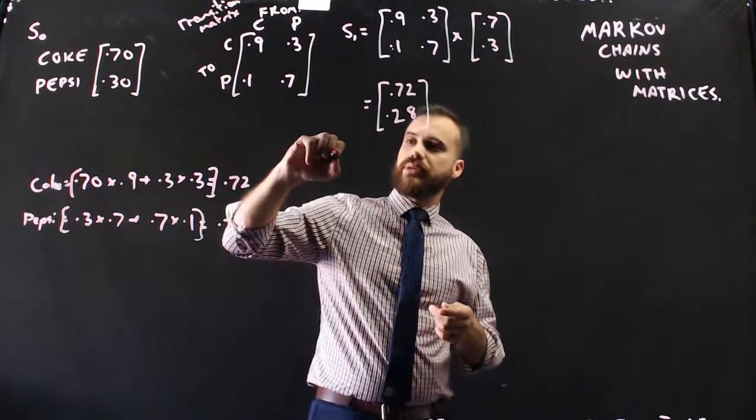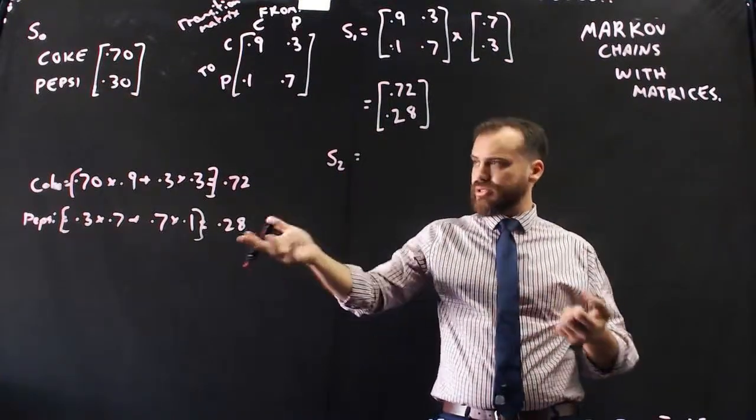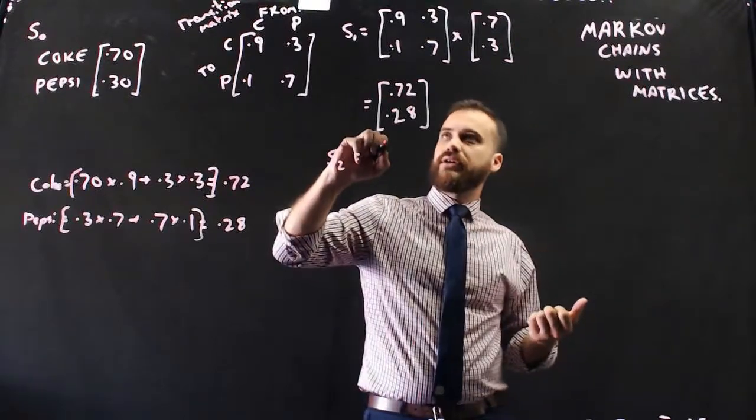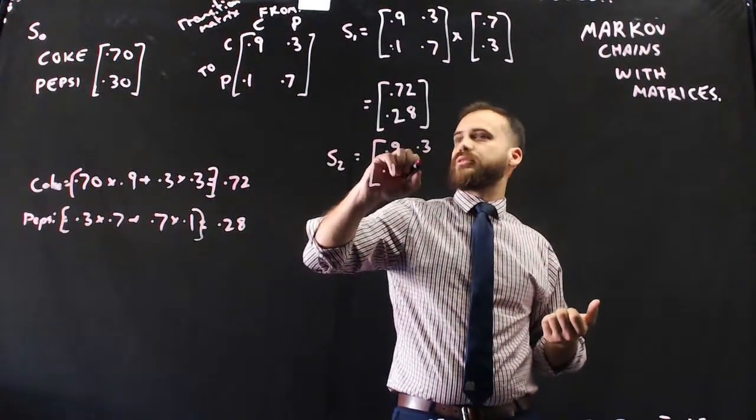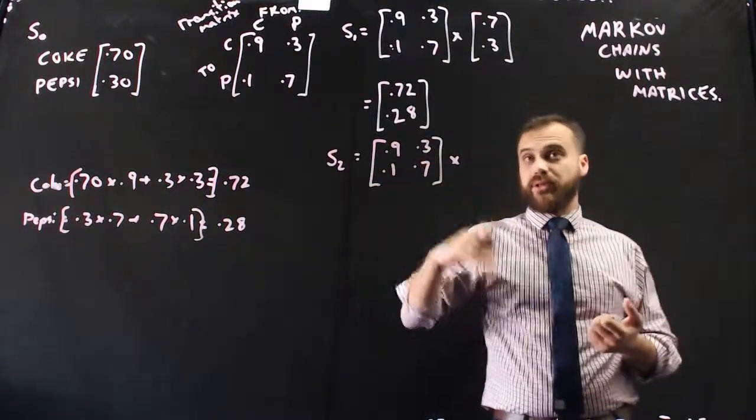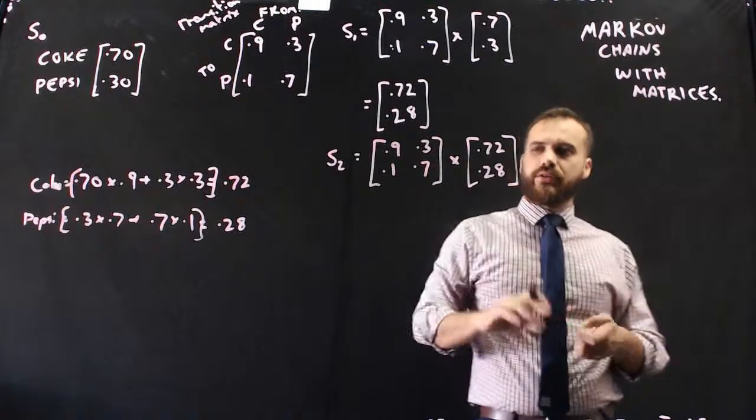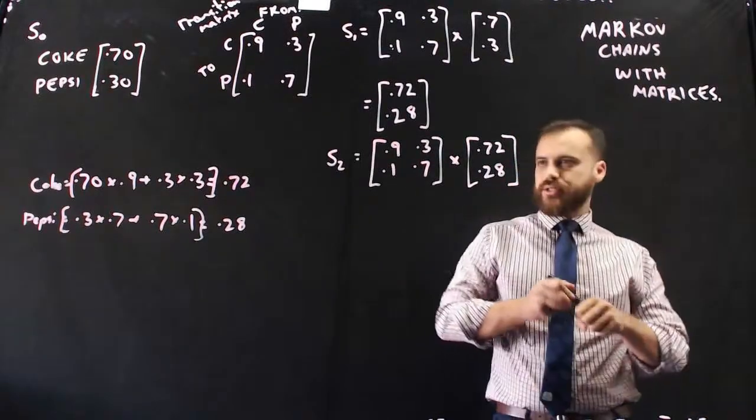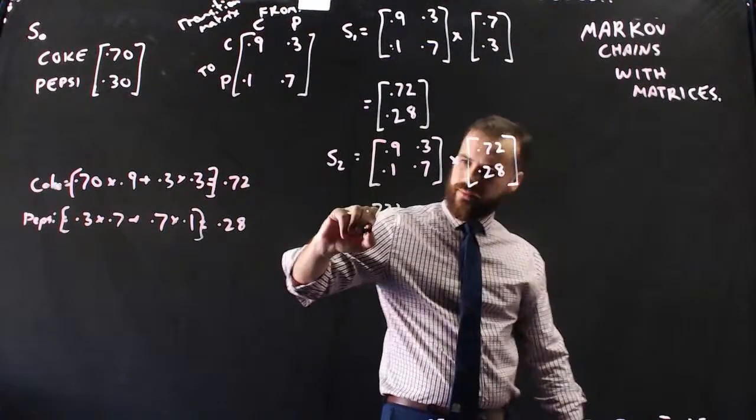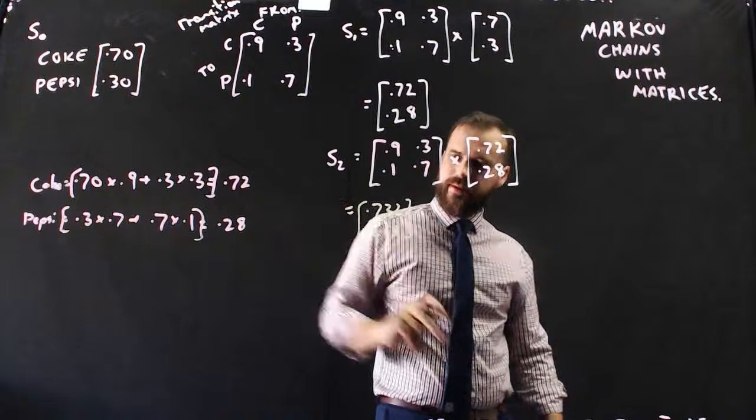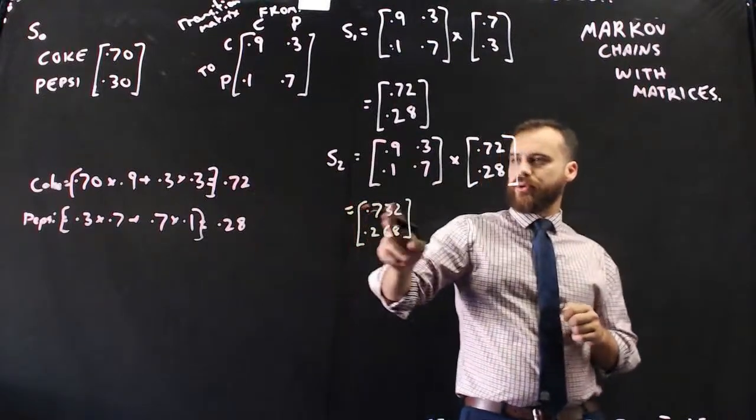Let's look at what state 2 would be. If this was January, this is February, state 2 is going to be March. It looks like Coke's going to increase their share. So the transition matrix remains the same, 0.9, 0.1, 0.3, 0.7, but now we need to multiply it by state 1. Let's type that into our calculator and see what pops out. When I type that into my calculator, I get 0.732, 0.268. So you can see Coke is still gaining ground. They've gone from 0.7 to 0.72 to 0.732.